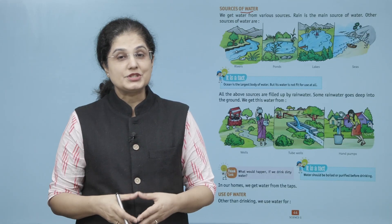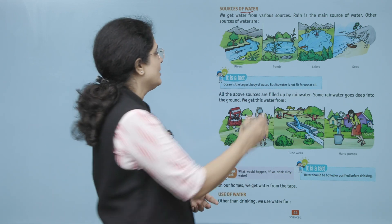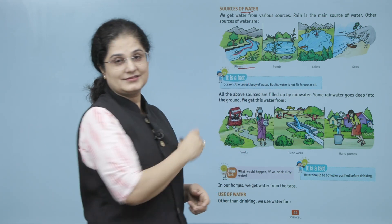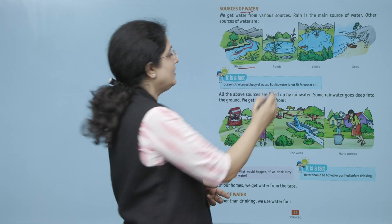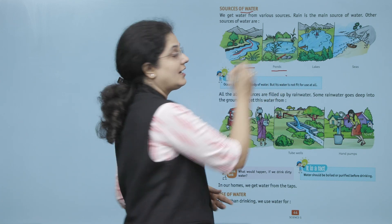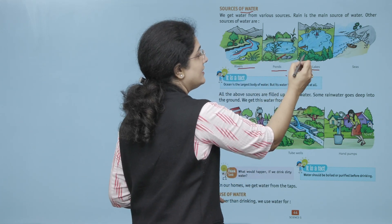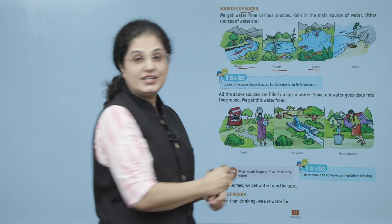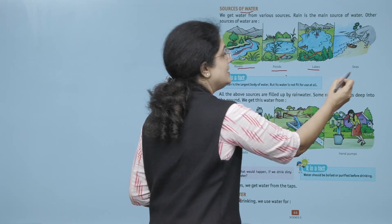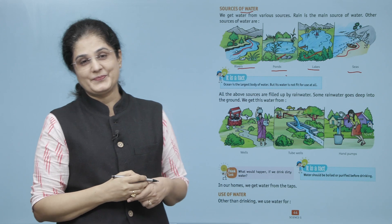Paani ke aur dousre sources kya hai? Rivers, yane ki nadiaan. Then ponds, yane ki talab. Then lakes, yane ki jheel. Aur seas, yane ki samudra.